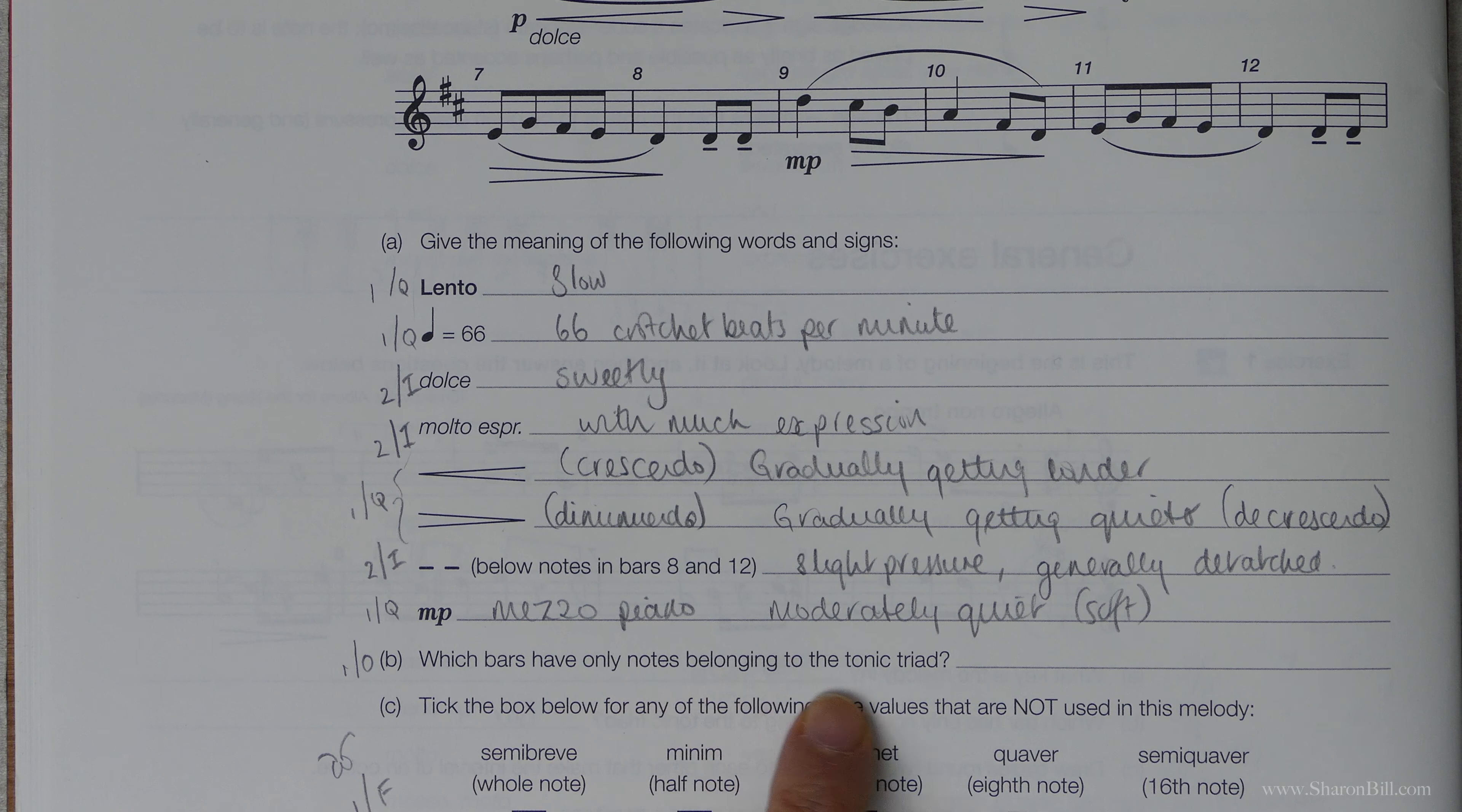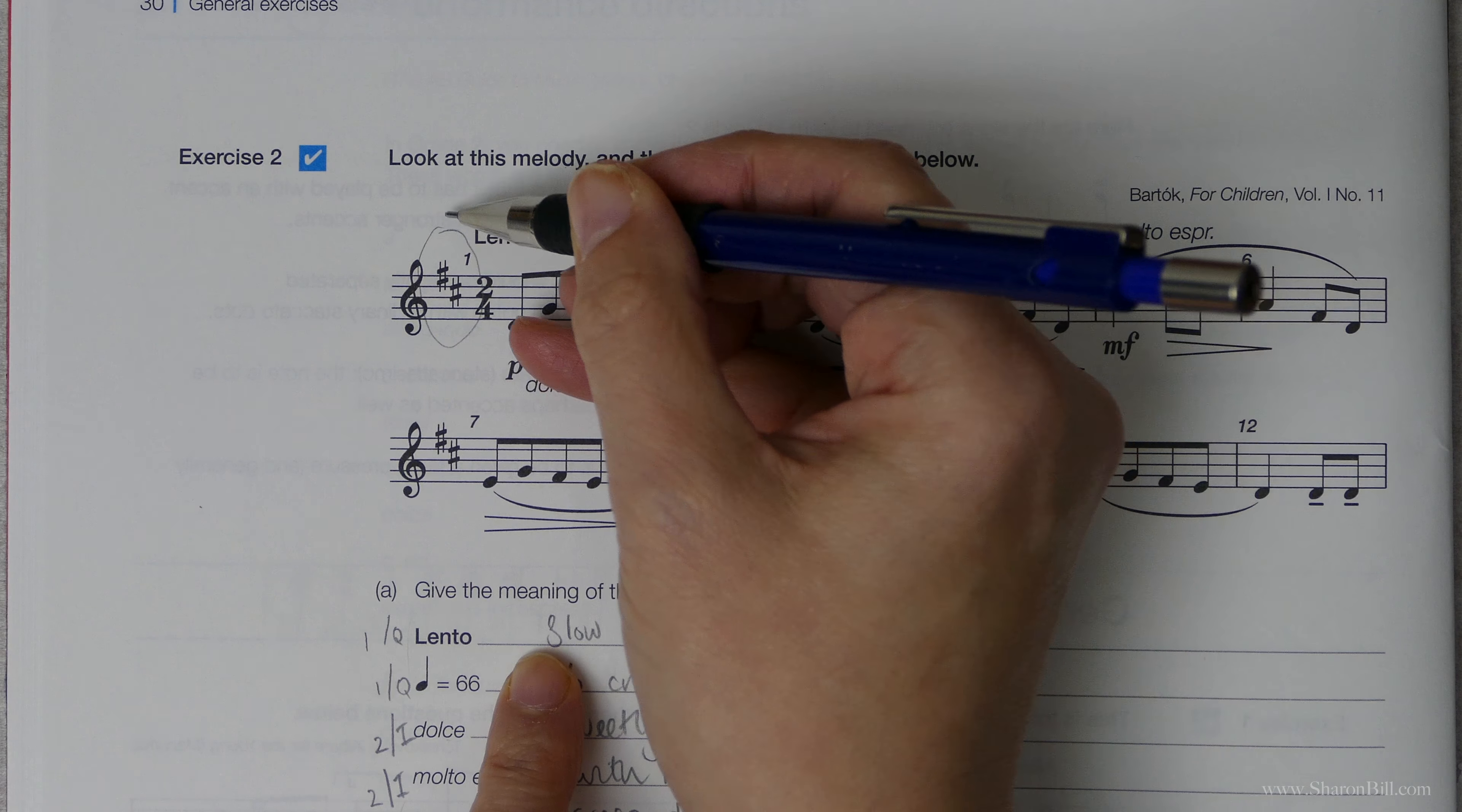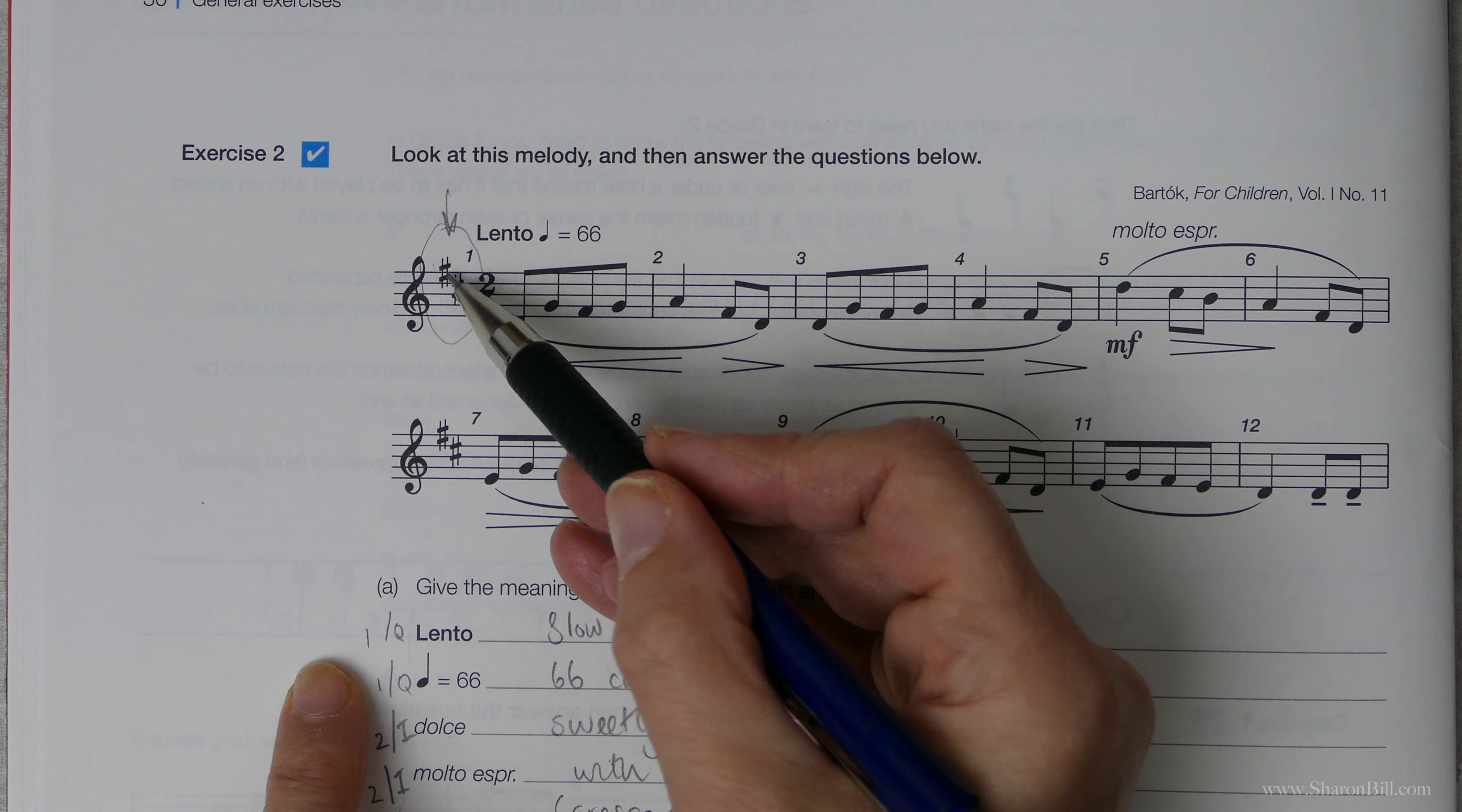Which bars have only notes belonging to the tonic triad? Now this is a double-barreled question. Before we can answer what the notes of the tonic triad are, we first need to establish what the key is. So let's just look at this piece of music. The clue we have is here in the key signature. We've literally got this key signature to help us. We've got an F sharp and a C sharp. And if you refer to grade 1 L, you will find that that's D major.